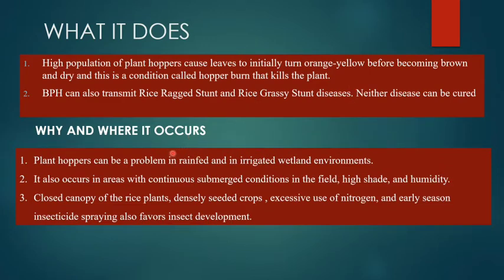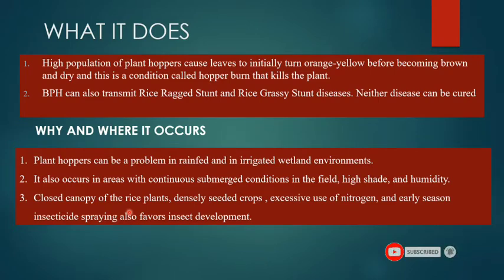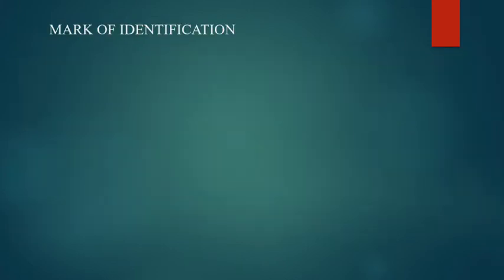BPH occurs in rain-fed conditions and in irrigated wetland environments, and also in submerged field conditions where humidity is high. The closed canopy of rice plants due to densely seeded crops favors BPH more. Excessive use of nitrogen and early season insecticide spraying also favors insect development, so selective pesticides should be used to manage BPH.